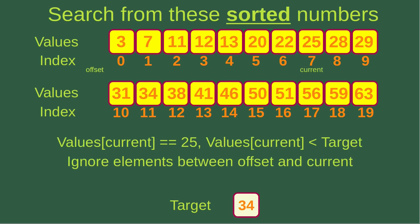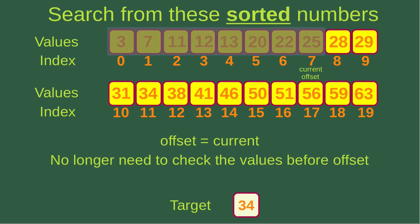The current index is now 7, and I check whether the value at index 7 equals the target. The current index gives me 25, which is smaller than the target 34. In this case, I ignore the elements between offset and current, because since the numbers are sorted, all values between offset and current would be smaller than the target. I assign the current index to the offset variable, so both offset and current become 7, and those numbers are shaded in gray.